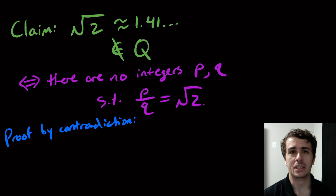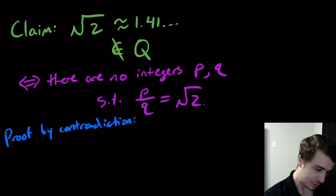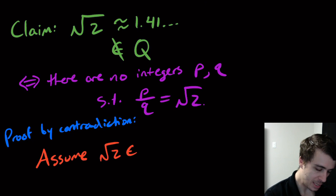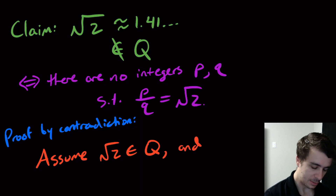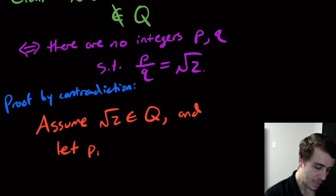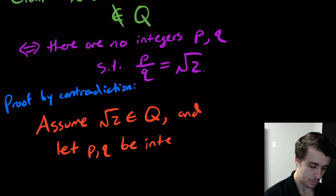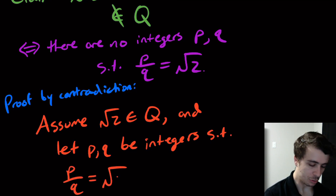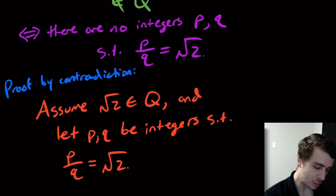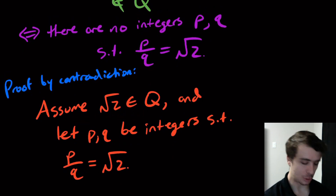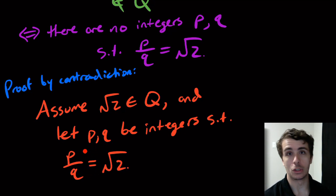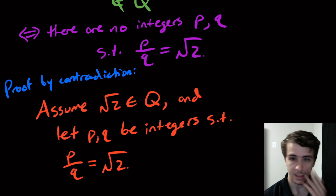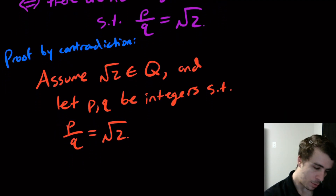We assume that the statement is false — that the square root of two actually is rational. So assume the square root of two is in Q, and let p and q be integers such that p over q equals the square root of two. That's just based on our assumption that the square root of two is rational, so there must be two integers for which one over the other equals it.